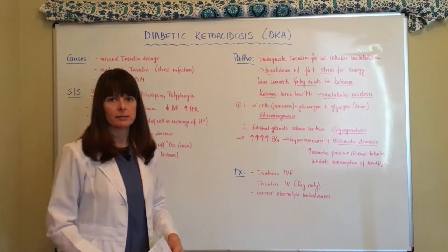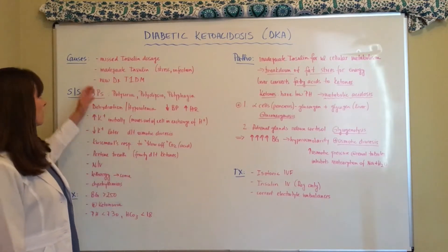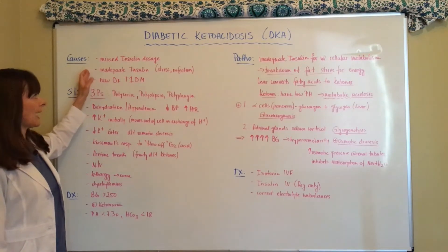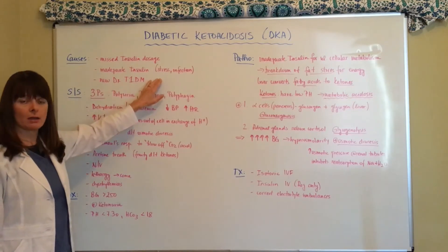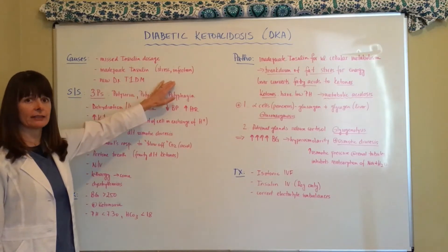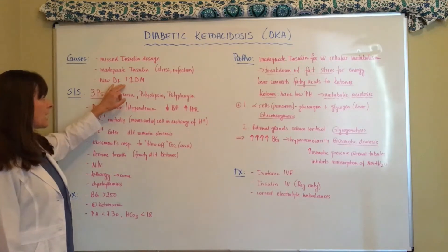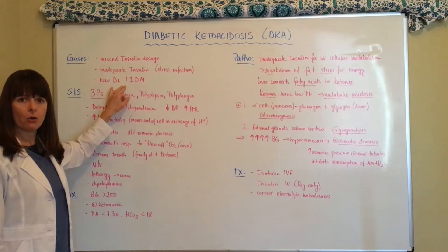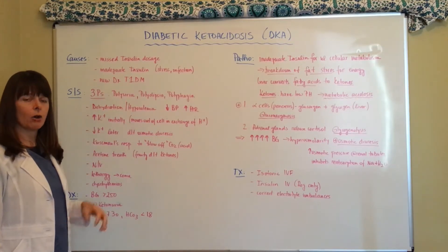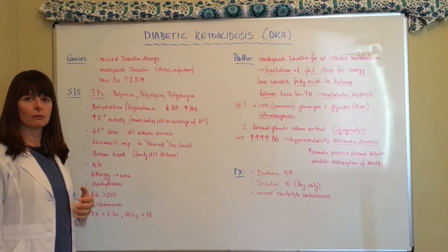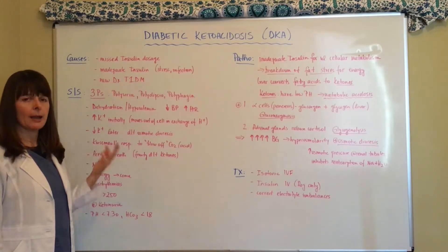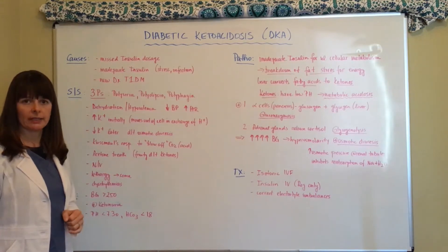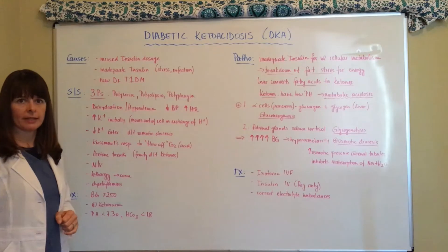Let's look at the causes. There are basically three different causes: missed insulin dosages, inadequate insulin because the patient is under a lot of stress or has an active infection, or they are newly diagnosed type 1 diabetics. Sometimes the patient will not know that they are diabetic — all these pathophysiological mechanisms will kick in and the patient will end up in DKA at the hospital, where it'll be discovered that he or she is a type 1 diabetic.